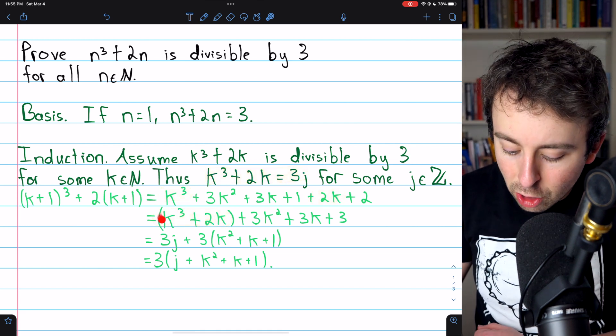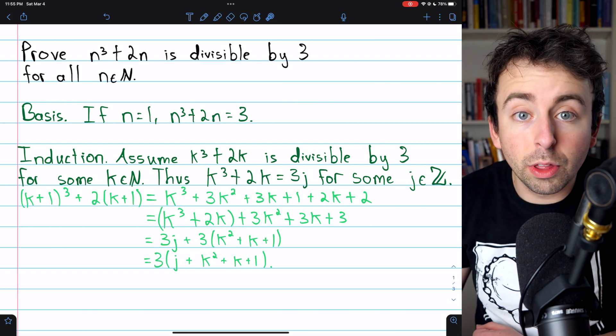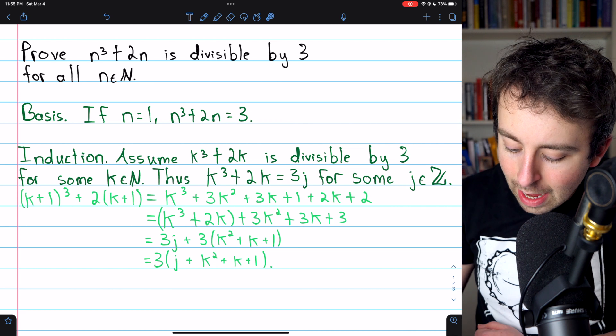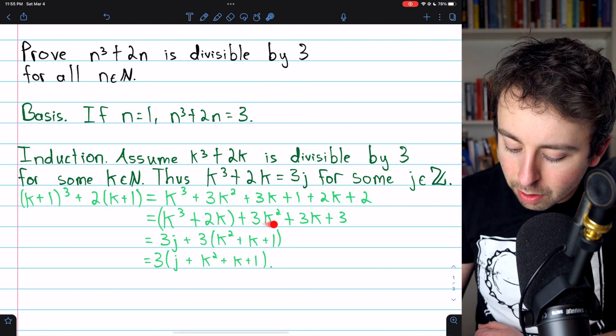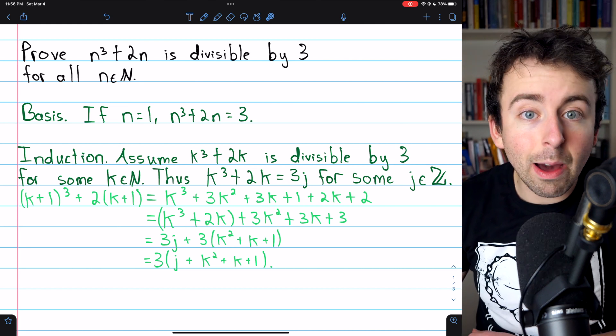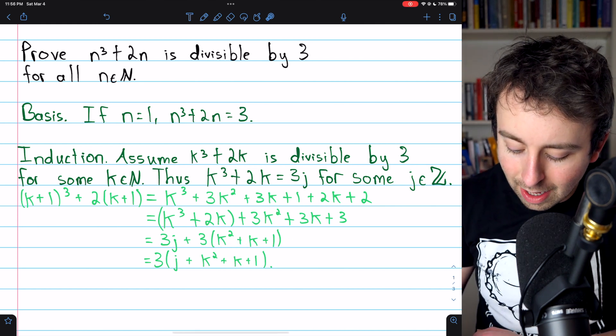And then k cubed plus 2k by the induction hypothesis is equal to 3j for some integer j. So we'll replace that with 3j. And then the remaining term here, 3k squared plus 3k plus 3, let's pull a 3 out of that. That leaves 3 times k squared plus k plus 1.